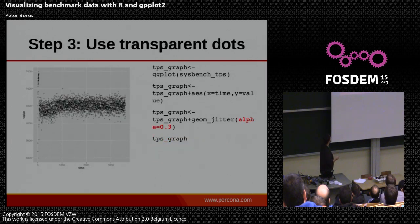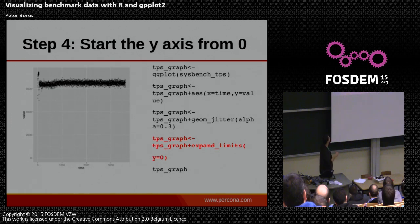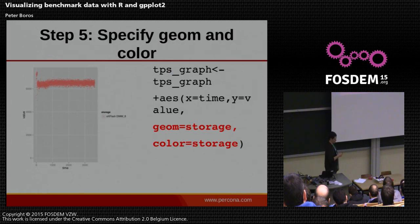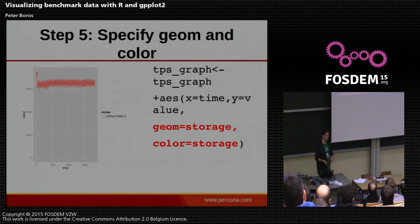This seems inconsistent at first, but it's only because R auto-detected the axis. You can use the expand_limits function to set the start of the y-axis to zero, which brings us to this graph. You can specify a color aesthetic using the storage column from the data frame — it doesn't matter what you specify as color; if something is a different text or number, it will be assigned a different color. And this automatically generates the legend.